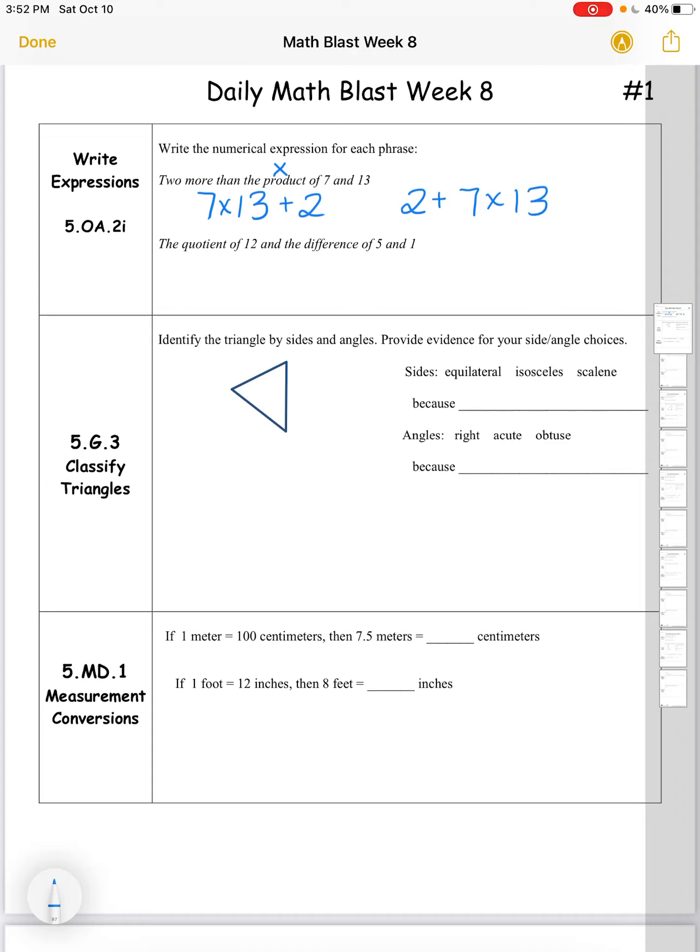Now keep in mind that order of operations tells us multiplication comes before addition, so it is not necessary to have parentheses here. However, it will not hurt if we choose to put parentheses around the 7 times 13.